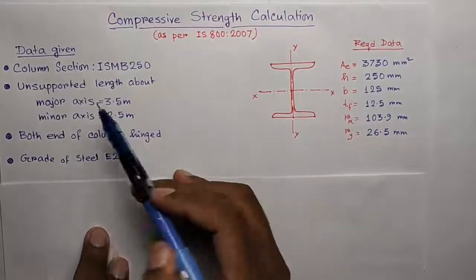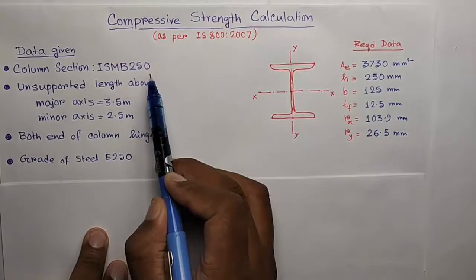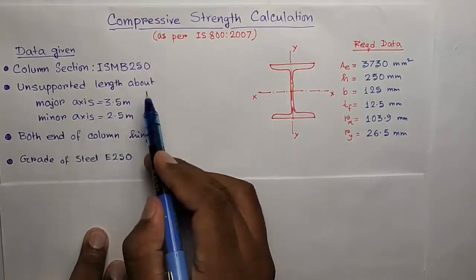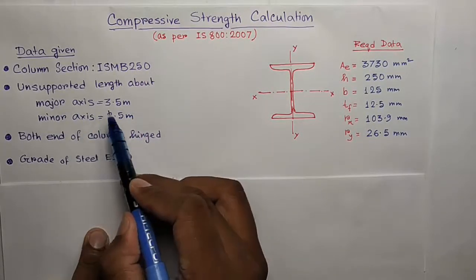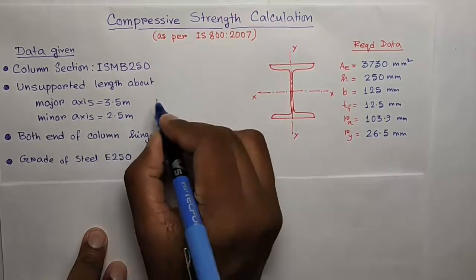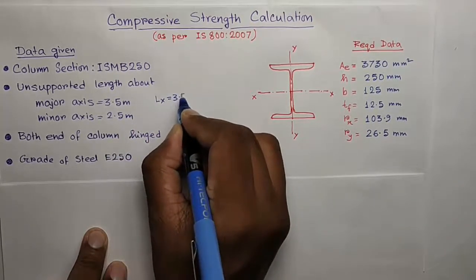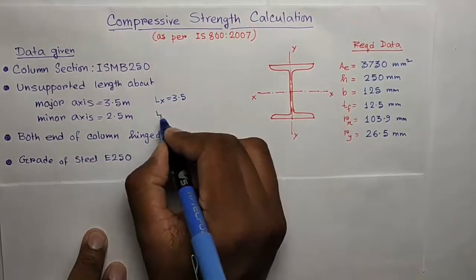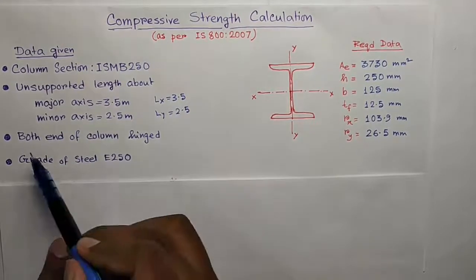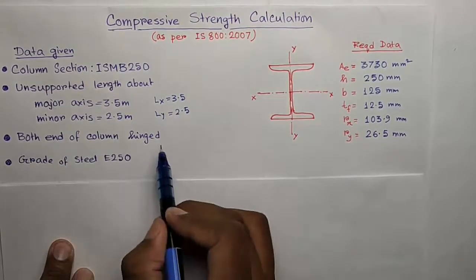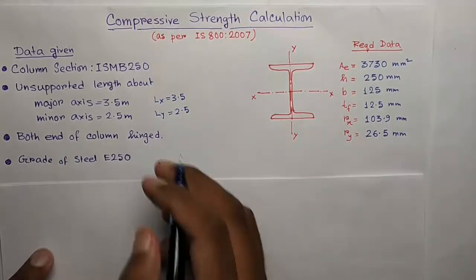So let's start. The data given here is column section ISMB 250 and the unsupported length of the column about major axis is 3.5 meters. It means the LX is 3.5 and about the minor axis LY is 2.5 meters. And both ends of the column are hinged.